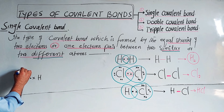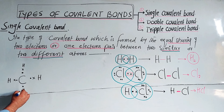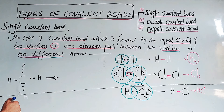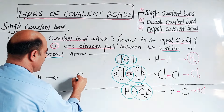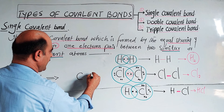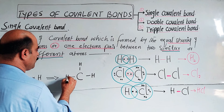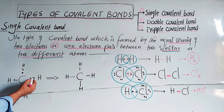Carbon has 4 valence electrons and needs to complete to 8; hydrogen needs to complete to 2. One carbon atom bonds with four hydrogen atoms. Each hydrogen atom and the carbon atom equally share one electron each, forming a single covalent bond per hydrogen. The shared electrons are counted with both atoms. Hydrogen's first shell completes by 2, and carbon's second shell completes by 8 via the four single covalent bonds formed.